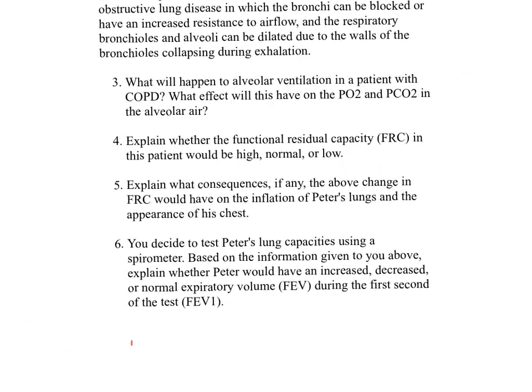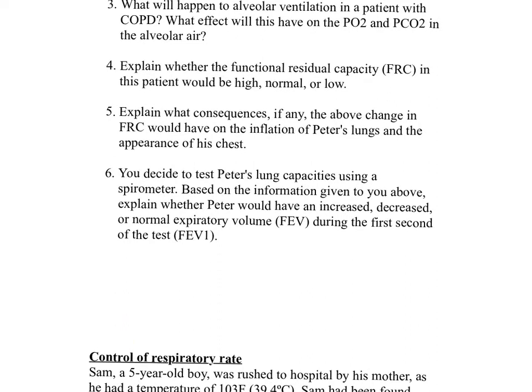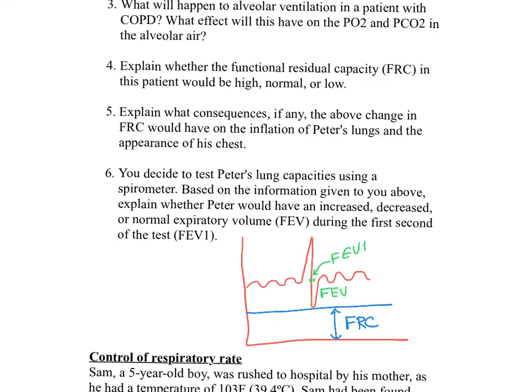Number six: you decide to test Peter's lung capacities using a spirometer. Based on the information given, explain whether Peter would have an increased, decreased, or normal expiratory volume during the first second of the test — signified as FEV1. We're asking how much air he is able to blow out after a normal tidal volume in that first second. A spirometry test on Peter would reveal an obstructive lung disorder. He is unable to effectively get air out of his alveoli and respiratory bronchioles, meaning his forced expiratory volume in the first second would be decreased compared to normal.